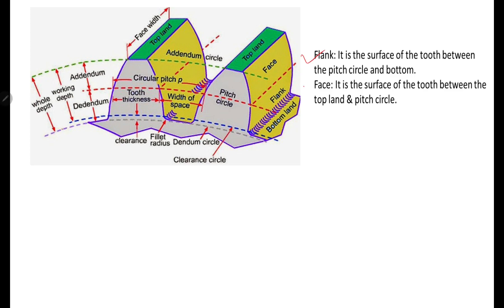Flank is the surface of the tooth between the pitch circle and the bottom — this lower portion is the flank. Face is the surface of the teeth between the top land and the pitch circle — the upper part is the face and the lower part is called the flank.